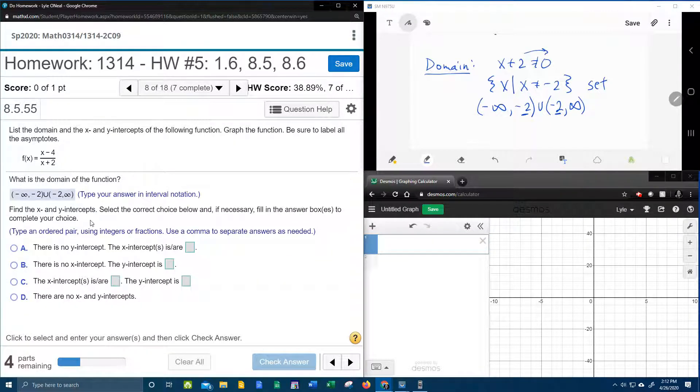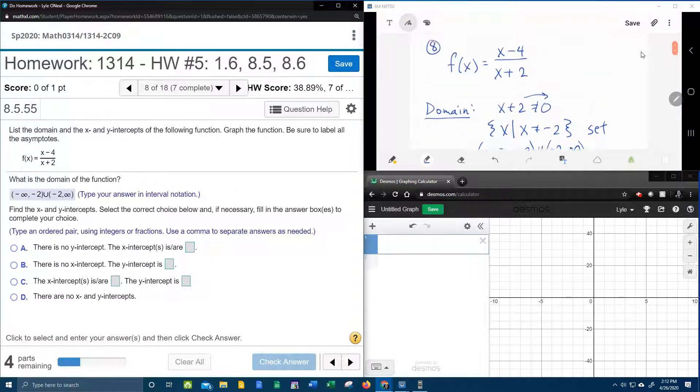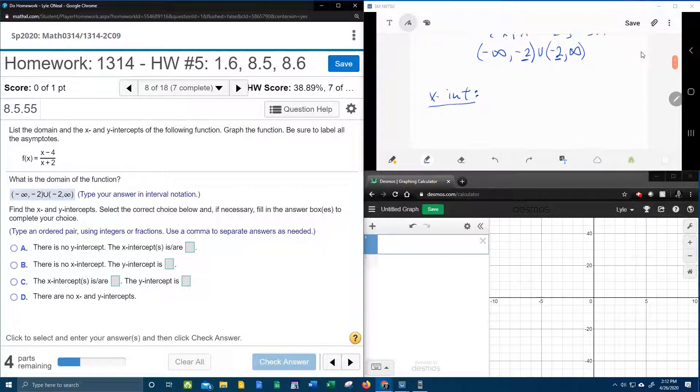The x and y intercepts. So next we need the intercepts. So up here in our window, we know that if you want to find the x intercepts of a rational function, you need to set the numerator equal to 0. So we're going to say x minus 4 equal to 0. Moving the 4 over gives me x is 4. And so that's the only x intercept.